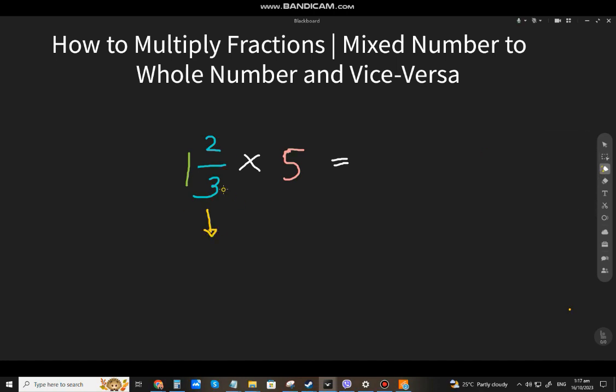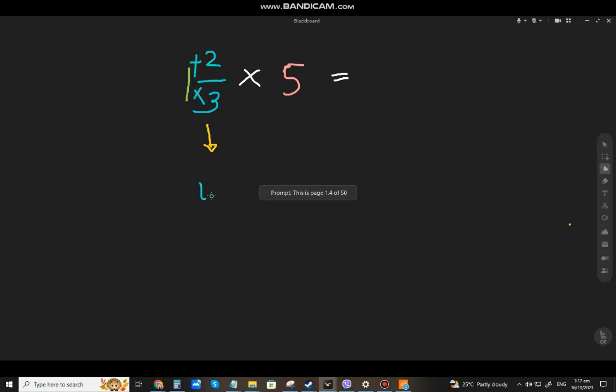So we'll make it an improper fraction. That will be 3 times 1, that will be 3, plus 2, that will be 5. That will be the numerator. Copy the denominator, that will be 5 thirds.